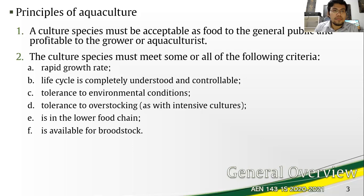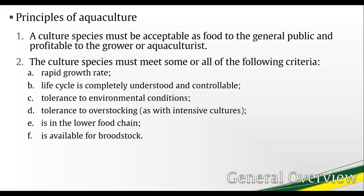The main idea of aquaculture is to control the growth of a species or multiple species of aquatic plants and animals so they can be sold in bulk and for a profit. Thus, the first principle of aquaculture is that a culture species must be acceptable as food to the general public and profitable to the grower or aquaculturist.